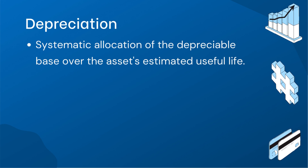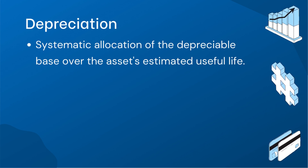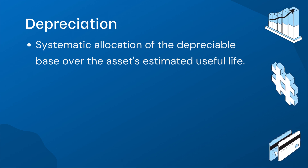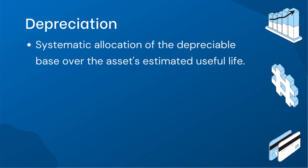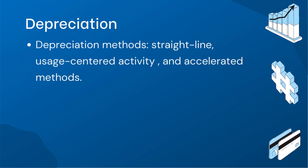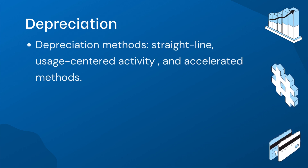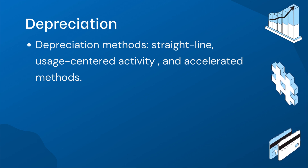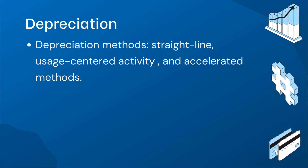Depreciation is a vital concept in accounting for fixed assets. It involves allocating the depreciable base of an asset over its estimated useful life. The chosen depreciation method should reflect the expected pattern of economic benefits or services derived from the asset. Common depreciation methods include straight-line, usage-centered activity such as units of output, and accelerated methods like declining balance and sum of the year's digits. It's critical to note that land, due to its indefinite useful life, is not subject to depreciation.